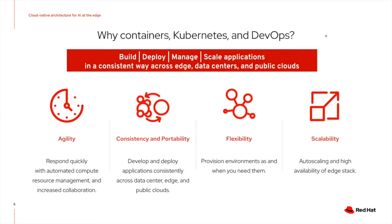Kubernetes distributions like Red Hat OpenShift provide the container orchestration needed to deploy and manage containerized applications. It provides capabilities to effectively manage containers, microservices, and distributed applications that run across both hybrid and multi-cloud infrastructures, as well as out at the edge. Together, containers and Kubernetes provide the agility, flexibility, portability, and scalability needed so that developers can write code once and deploy anywhere, then lifecycle-manage applications from core to edge to cloud consistently.